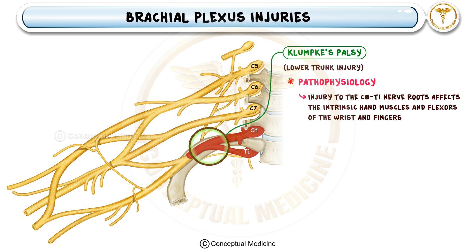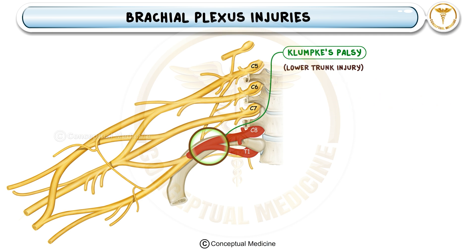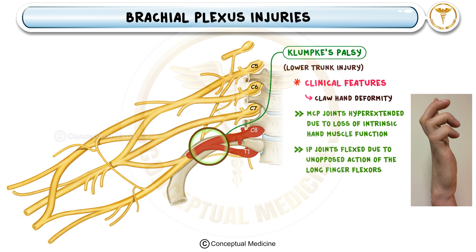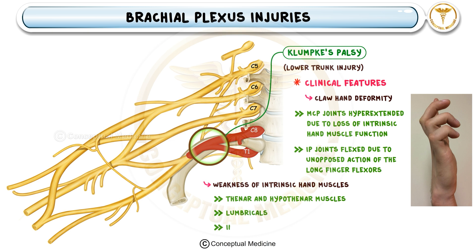Since C8 and T1 primarily control the intrinsic muscles of the hand and flexors of the wrist and fingers, damage to these nerves leads to severe weakness in hand movements. The hallmark feature of Klumke's palsy is the claw-hand deformity. In claw-hand, the MCP joints are hyperextended due to unopposed action of the extensor muscles, and the IP joints are flexed as the lumbricals, which normally balance finger movements, are paralyzed. Patients exhibit severe weakness of intrinsic hand muscles including the thenar and hypothenar muscles, lumbricals, and interossei, resulting in impaired grip and fine motor skills, making it difficult to grasp objects.